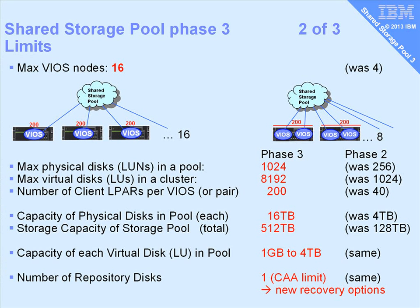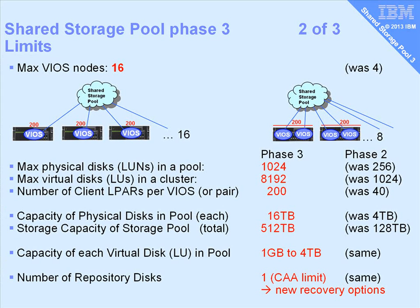We could move all the LPARs from one machine out of 8 — provided we're not in a busy period — and then take that machine down for maintenance, add extra resources like memory or adapters, and then bring the machine back up and move the logical partitions back. All the other limits have changed by a factor of 4 or 8. The maximum number of disks in the pool is now 1,000, and the number of logical units is 8,000 — that's more than enough. A VIO server pair can have 200 logical partitions.